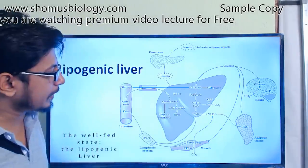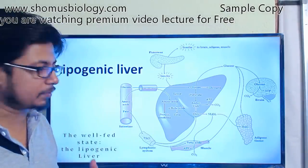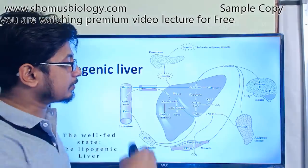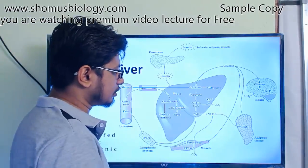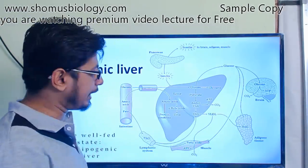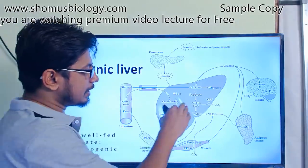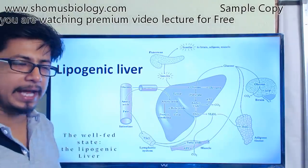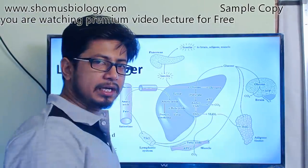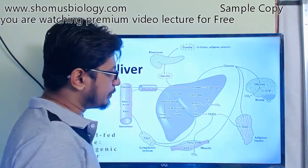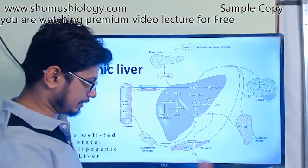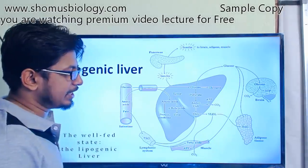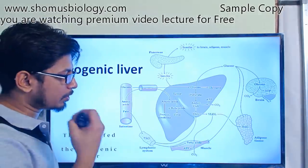The glucose taken up by the liver is converted through glycolysis to produce pyruvate, then through the TCA cycle, and then through the pyruvate dehydrogenase complex to produce acetyl-CoA. This acetyl-CoA is then processed to produce ATP and CO2 — the CO2 is exhaled out and the ATP serves as the energy currency of the cell.